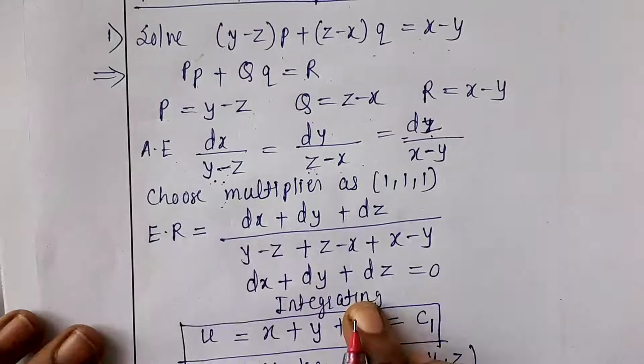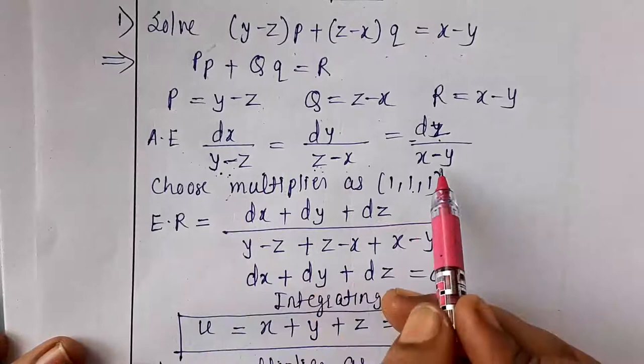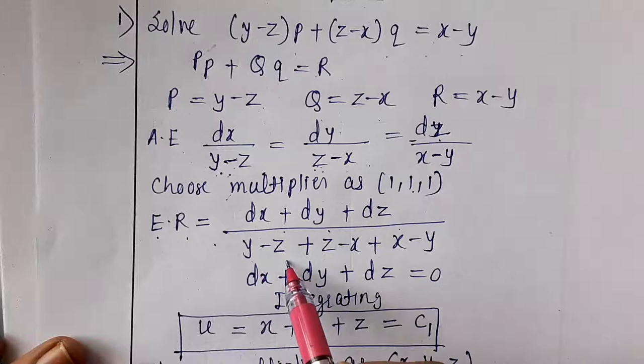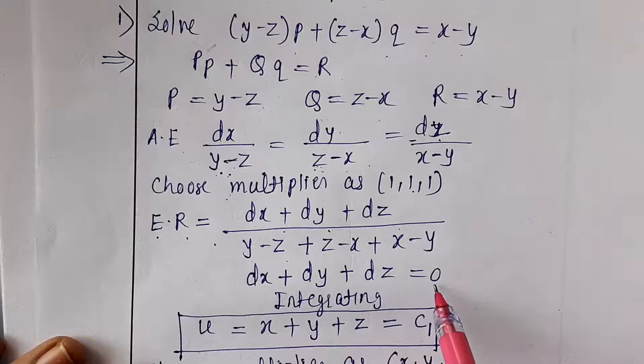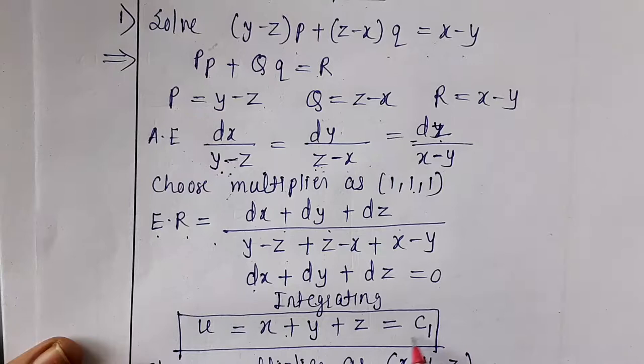If the denominator equals zero, the numerator must also equal zero. So we write each ratio equal to (dx + dy + dz) / (y − z + z − x + x − y). Since the denominator is zero, we set dx + dy + dz = 0. Integrating gives x + y + z = c₁.